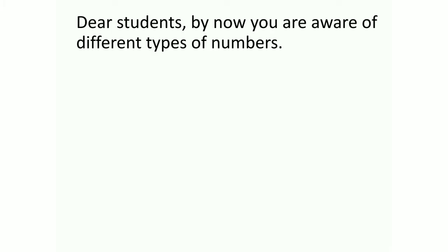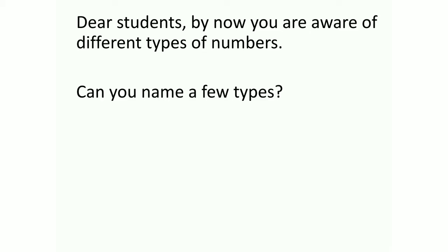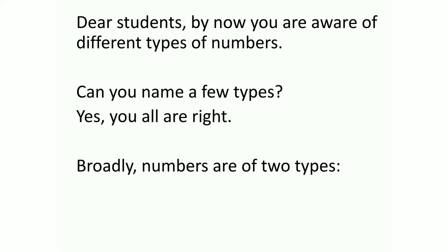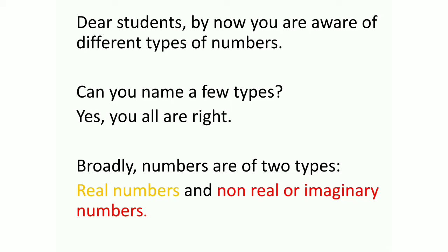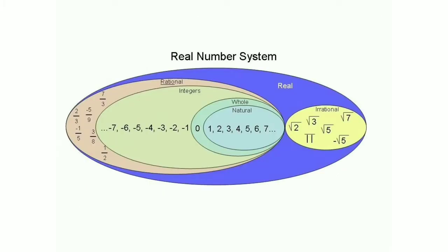Dear students, by now you are aware of different types of numbers. Broadly, numbers are of two types: the real numbers and the non-real or the imaginary numbers. Let us have a look at this Venn Diagram. Broadly speaking, the real numbers can be divided into rational and the irrational numbers.